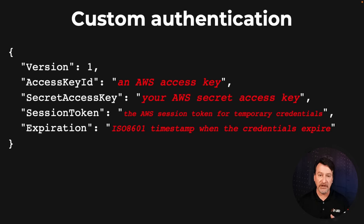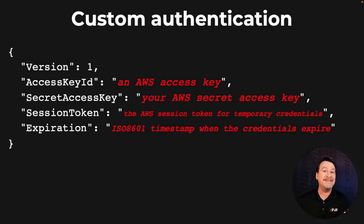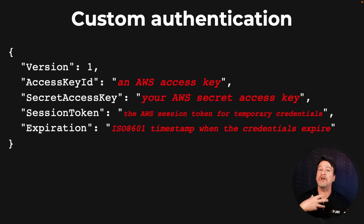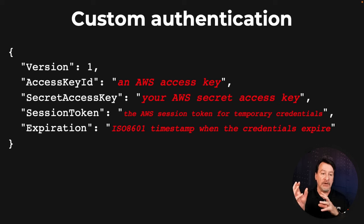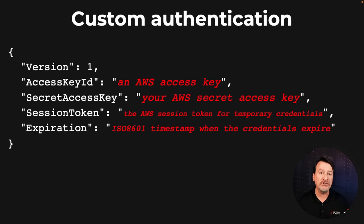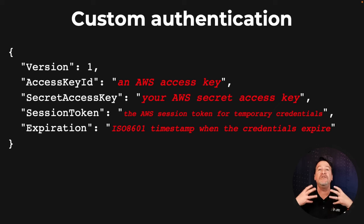Version 1, the access key, secret access key — just like what you generated from inside the AWS console — is something you're going to be doing programmatically, along with a session token and an expiration date. You pack that in there, set that credential equal to that back in the config file, and you get the custom authentication.